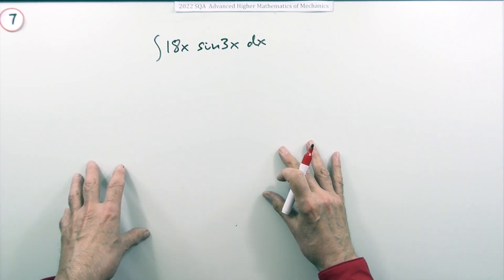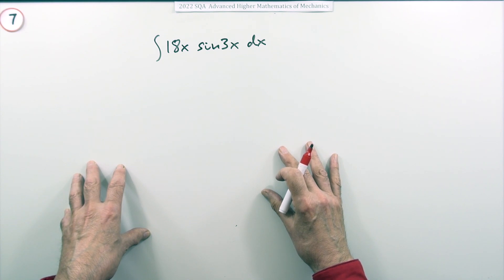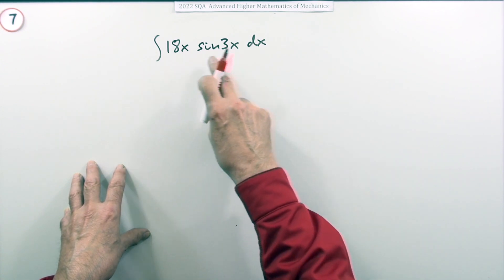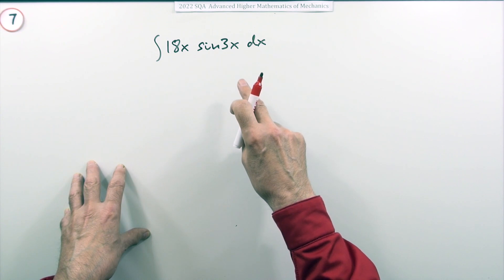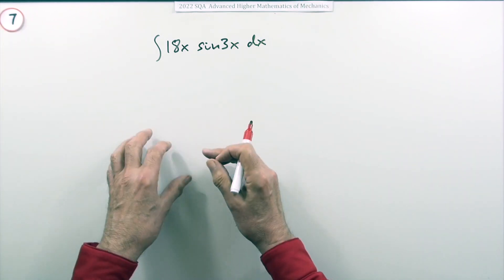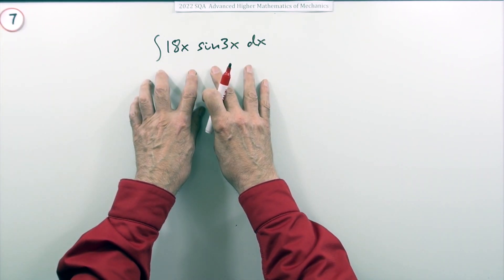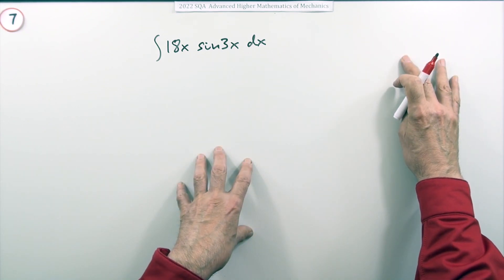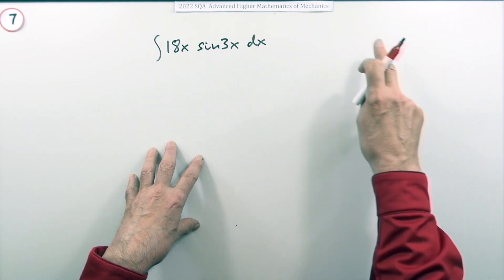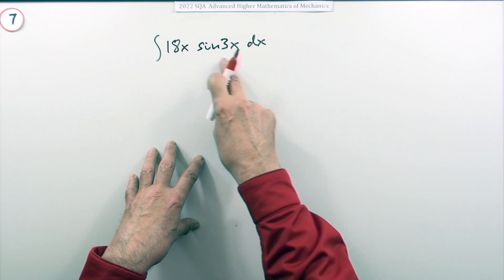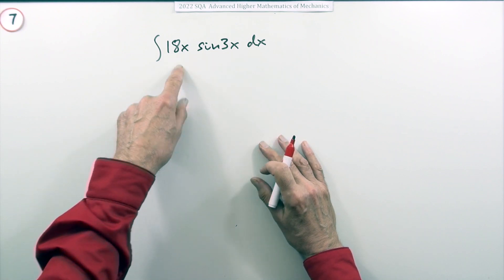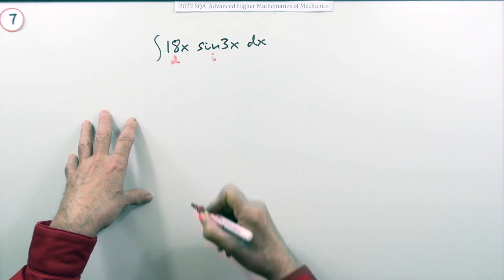It just comes from the product rule for differentiation in reverse. And the first stage is identify which expression you want to integrate and which one you want to differentiate. Making the one you're going to differentiate the one that will simplify. Because what happens is you replace this integral with another integral which for it to be effective would have to be simpler than it. So in the second integral choose whichever expression would differentiate down to something simpler. Well that wouldn't but that would. So differentiate that one and integrate that one.